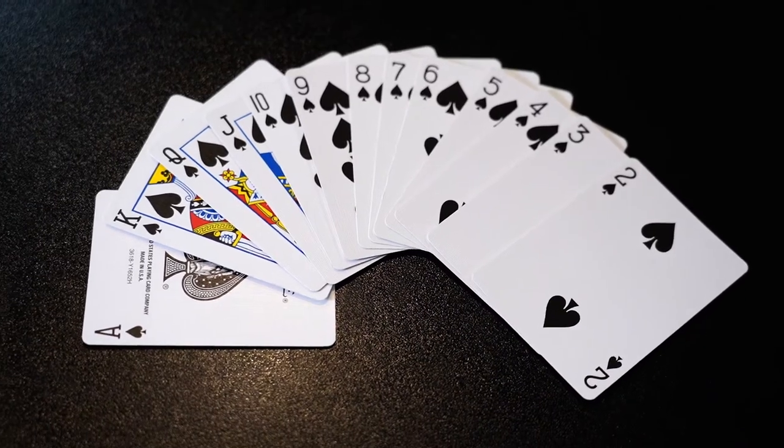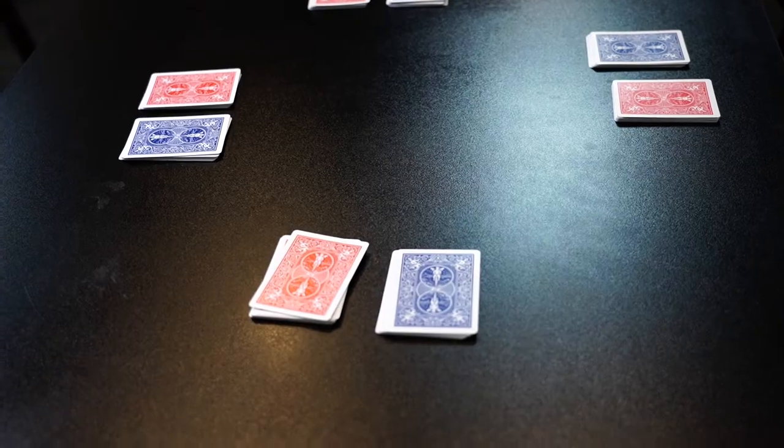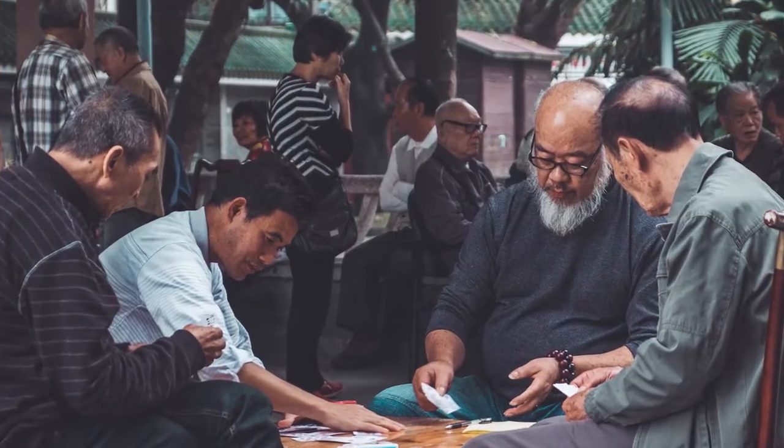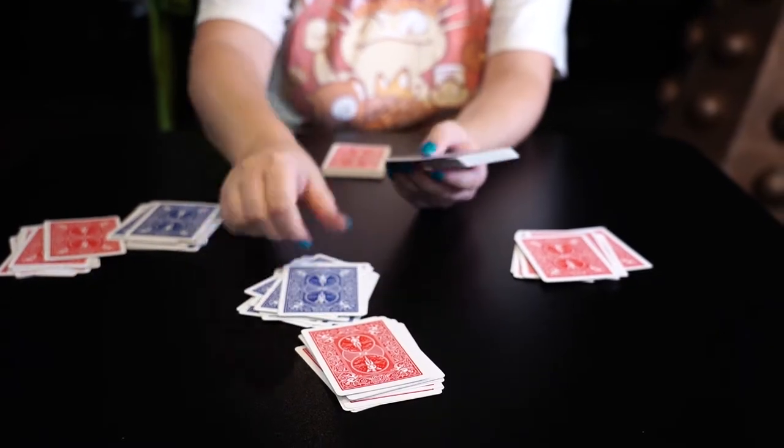In this game, Aces are high and 2s are low. Hand and Foot is typically played as a partner game. Partners sit across from each other at a table. Choose one pair to deal first.